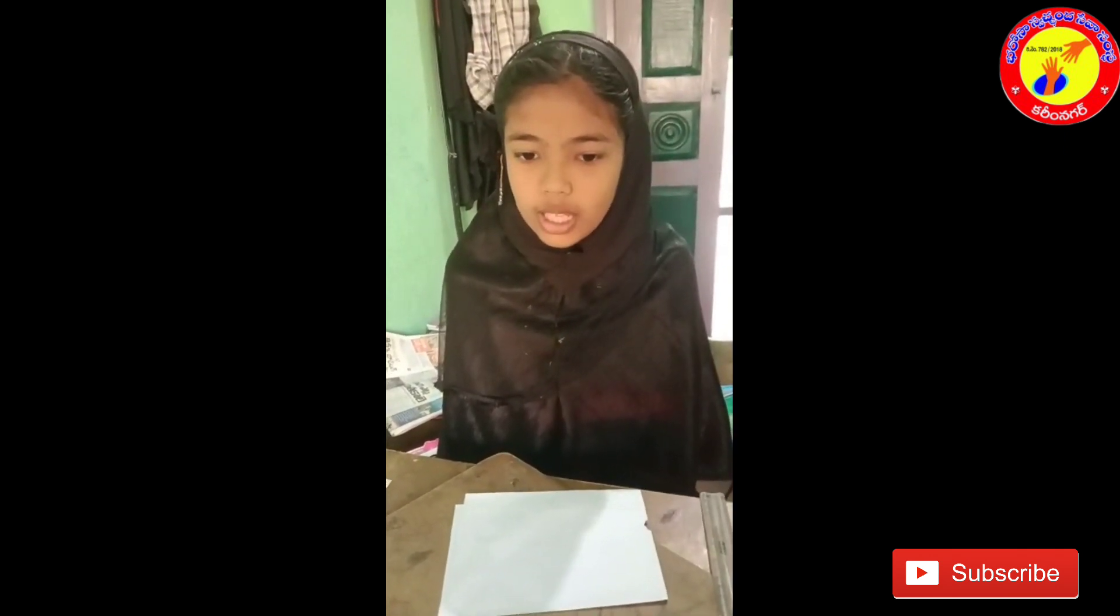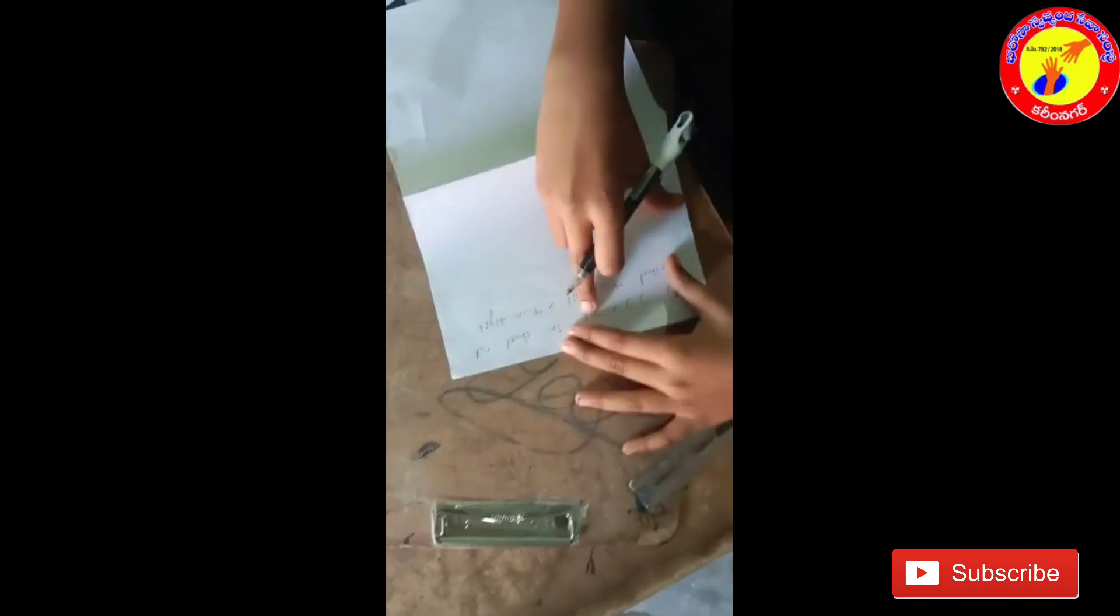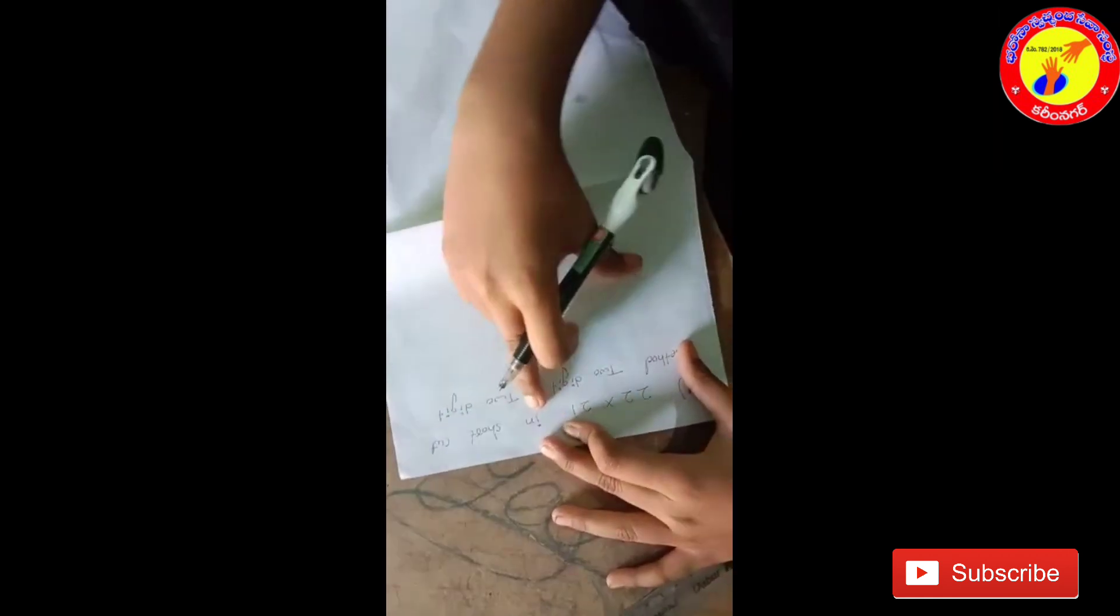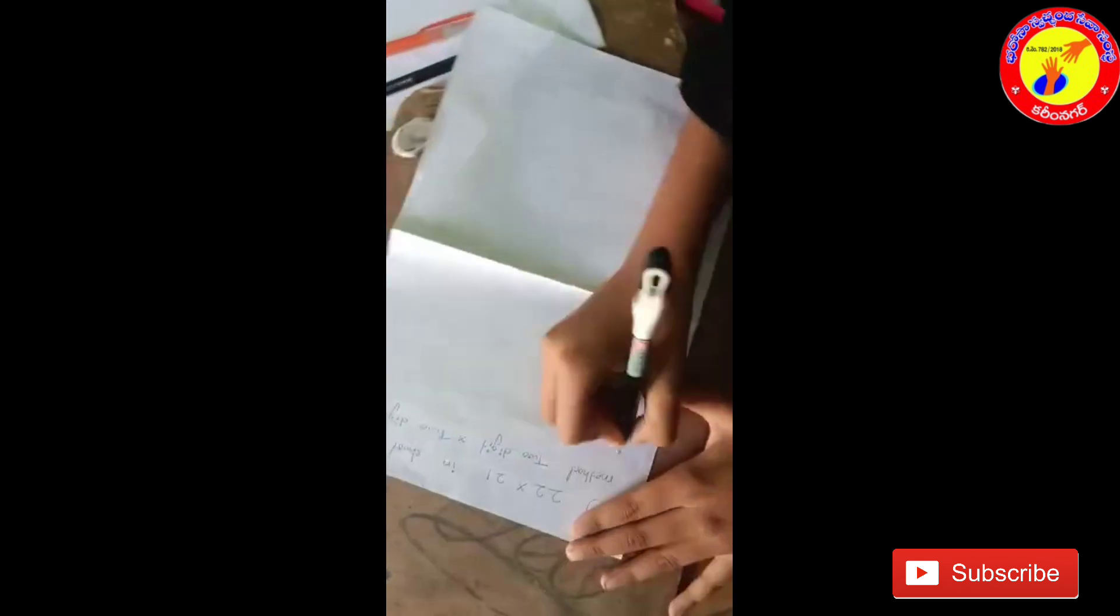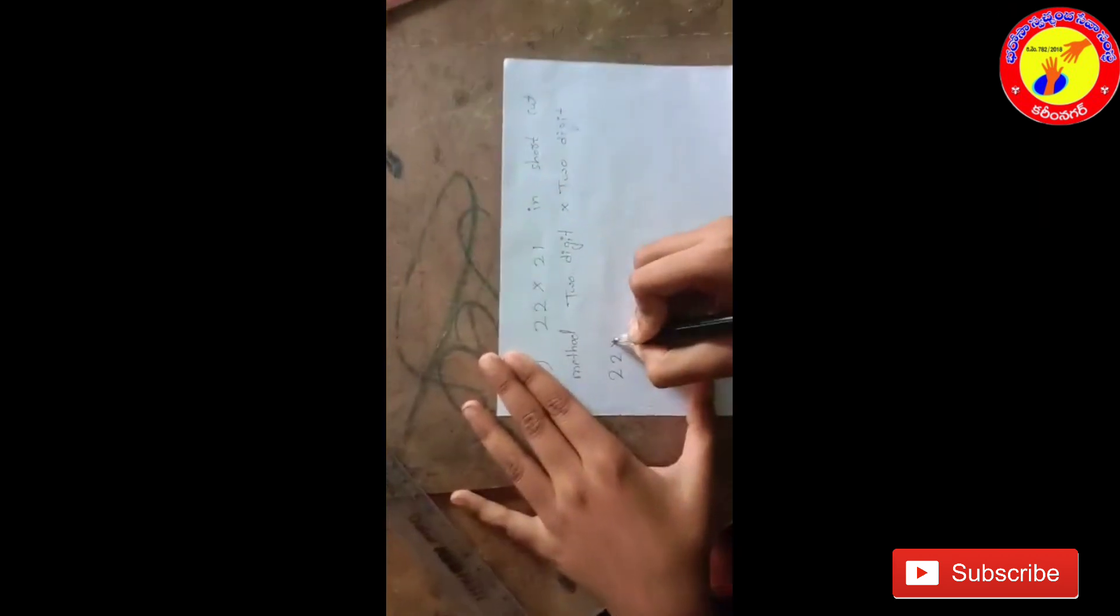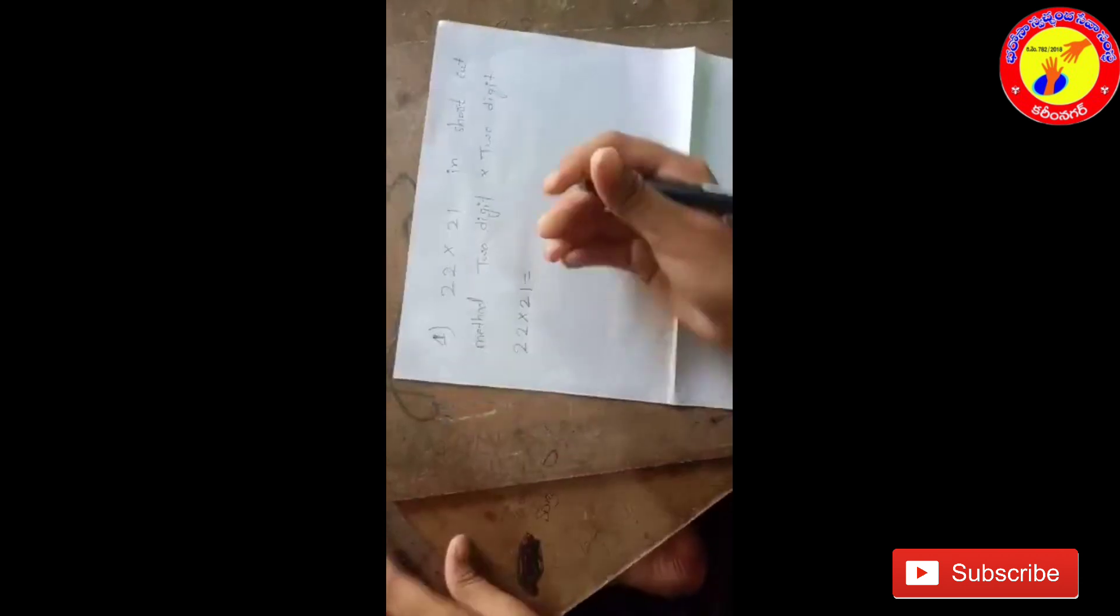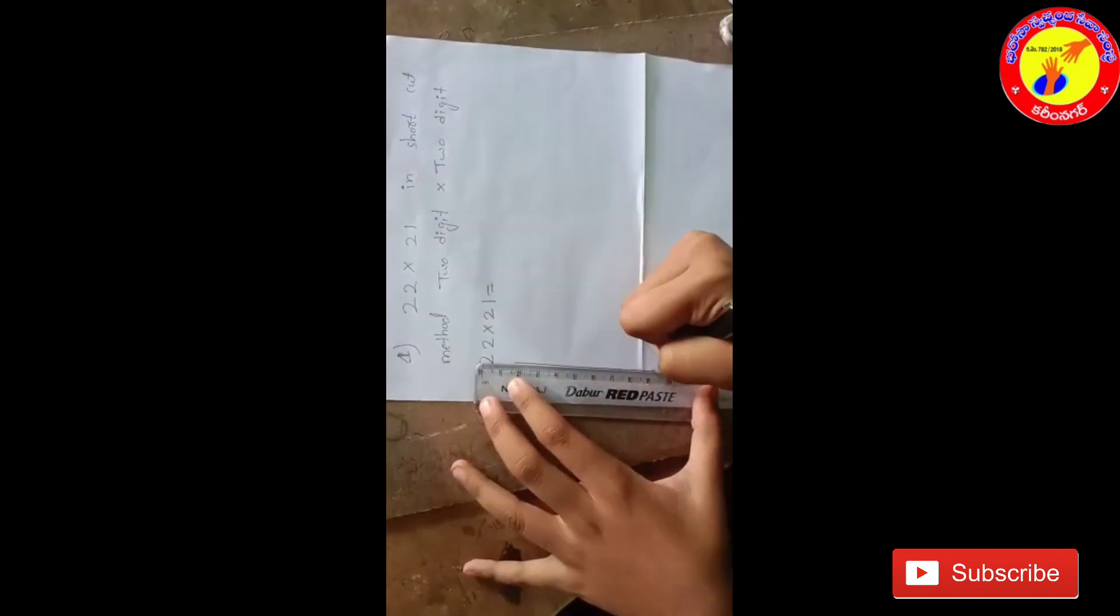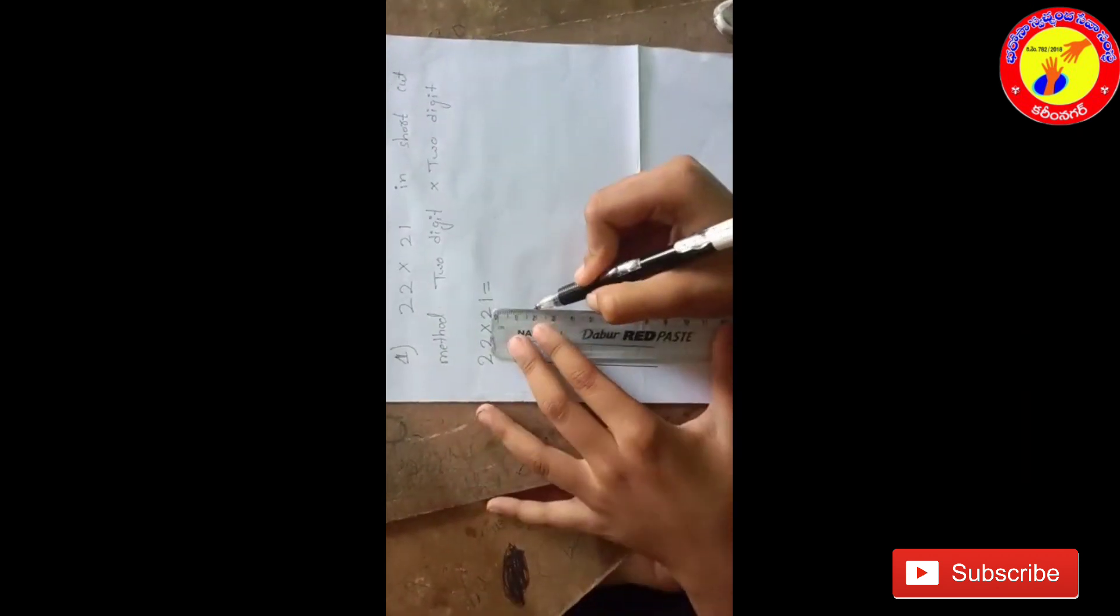I want to tell you about maths multiplication tricks. Let's see. 22 into 21 in shortcut method. 2 digit into 2 digit. 22 into 21 is equal to, we have to draw 2 vertical lines and 2 vertical lines.